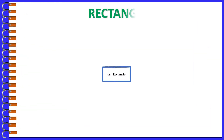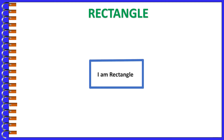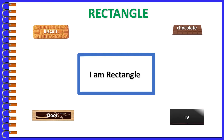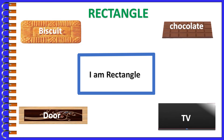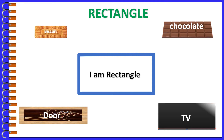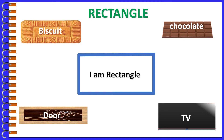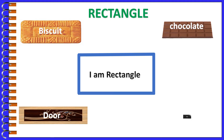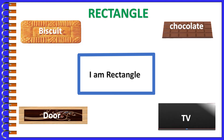I am rectangle. Look at the objects which are in rectangle shape. Chip, Biscuit, Chocolate, TV, Door.